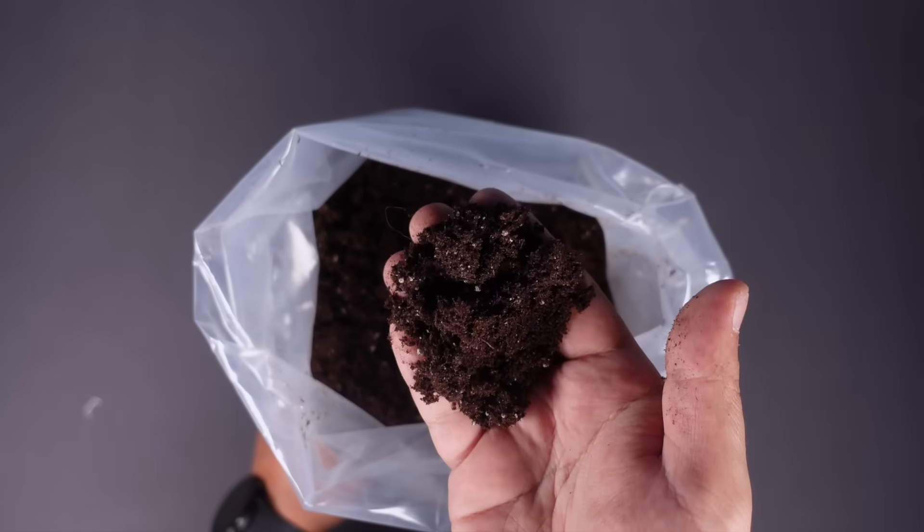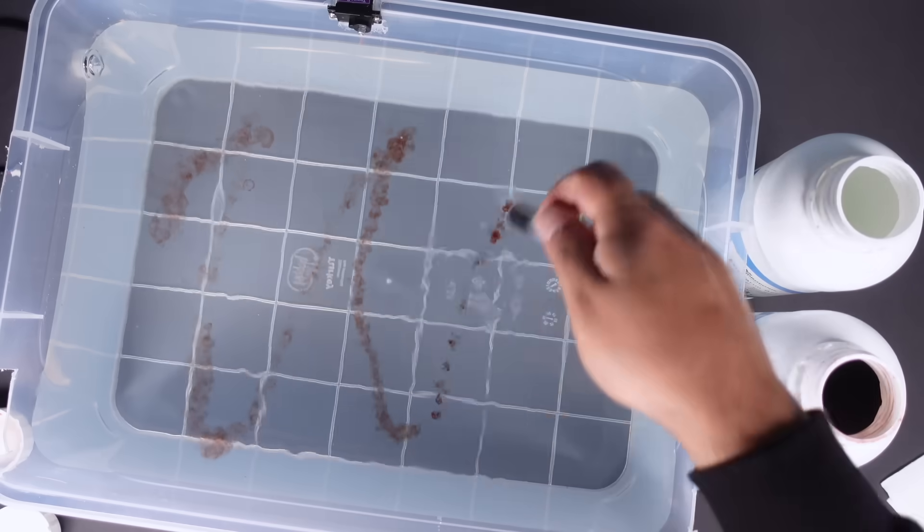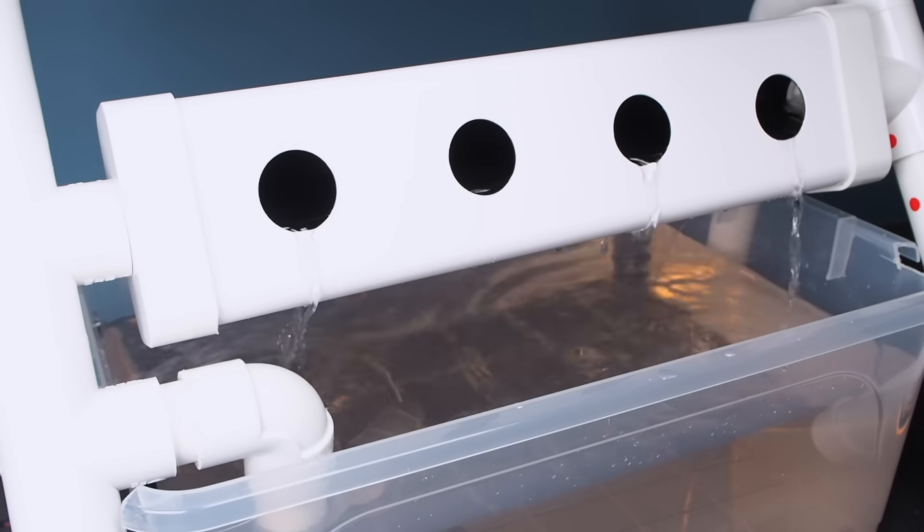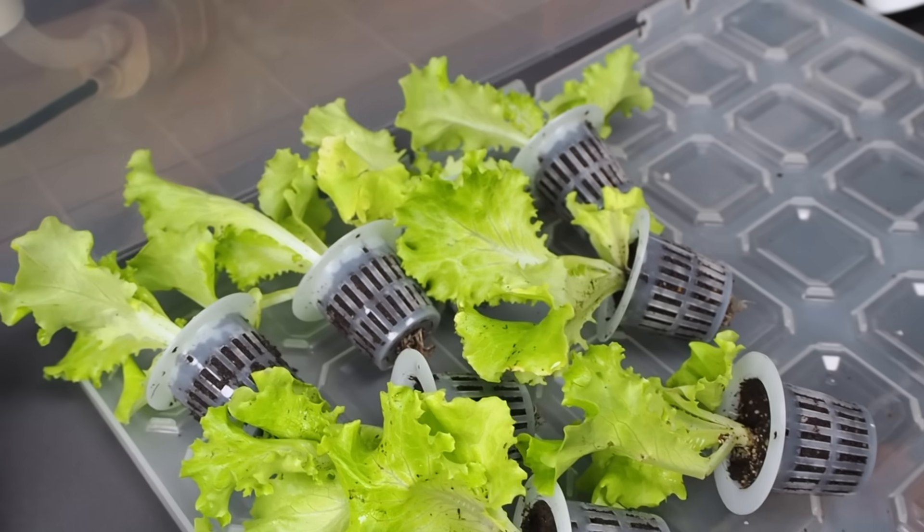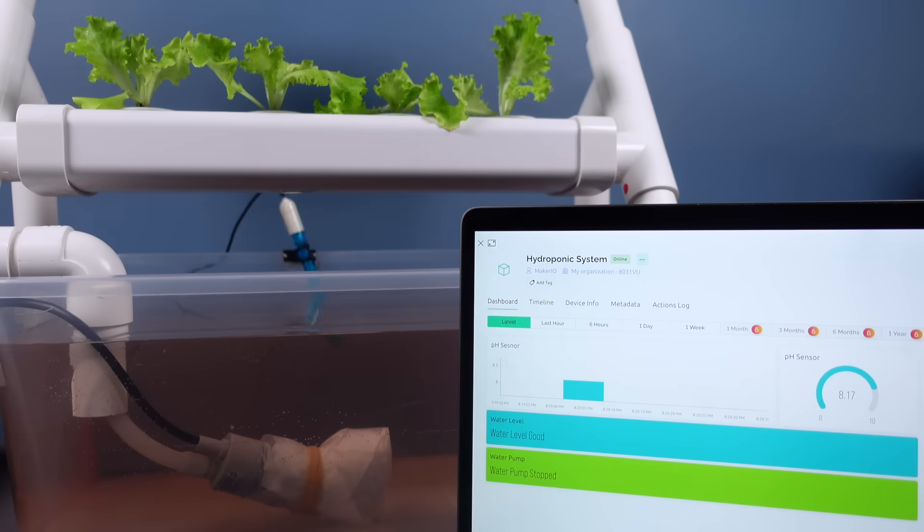This project shows how to control a hydroponic system as automation and how to monitor the desired data through applications. The main point is to activate the sensors included in the system and the water pump motor at intervals determined as automation, and then view the system operation and sensor data on a dashboard.